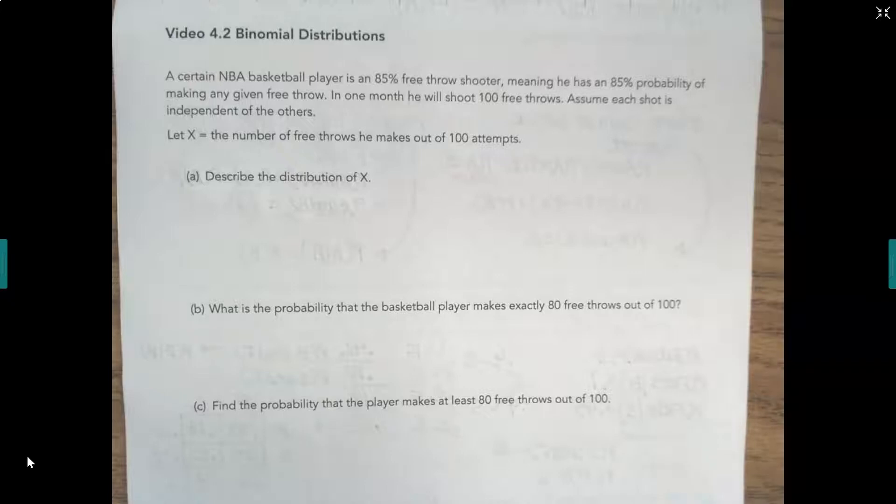We have a certain NBA player who is an 85% free throw shooter, meaning he has an 85% probability of making any given free throw. In one month he will shoot 100 free throws. Assume each shot is independent from the others, and the random variable X is defined as the number of free throws he makes out of 100 attempts.